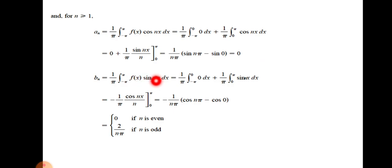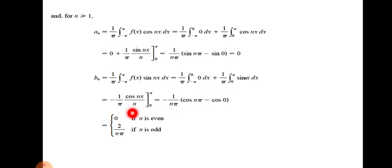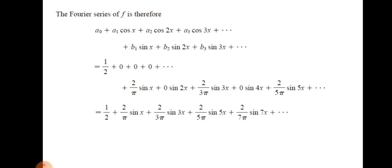For bₙ, we split the integral into two parts as before. The first integral vanishes, and the second gives (1/nπ)(cos(nπ) − cos(0)). Since cos(0) = 1: when n is even, cos(nπ) = 1, so bₙ = 0; when n is odd, cos(nπ) = −1, giving (−1 − 1)(−1/nπ) = 2/nπ. We can now write the full Fourier series and substitute specific values of n to obtain the first few terms.